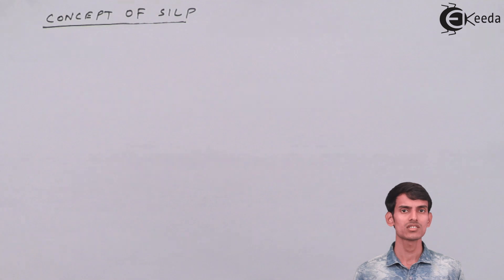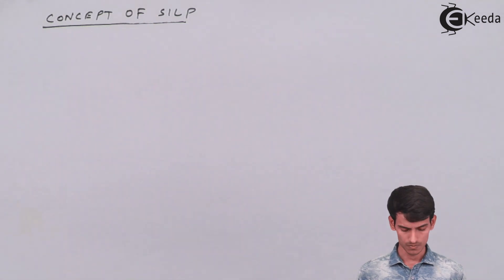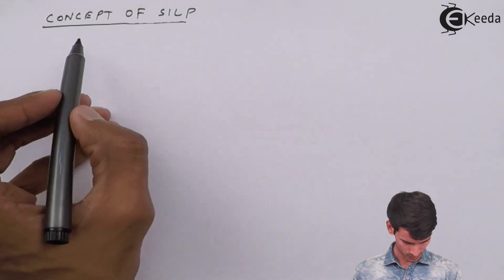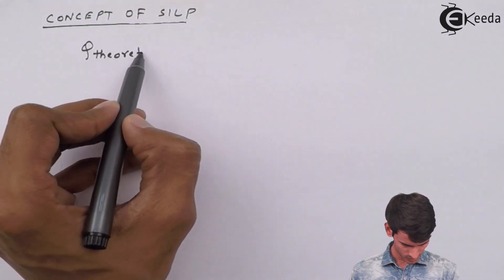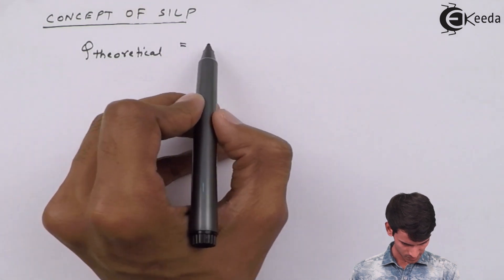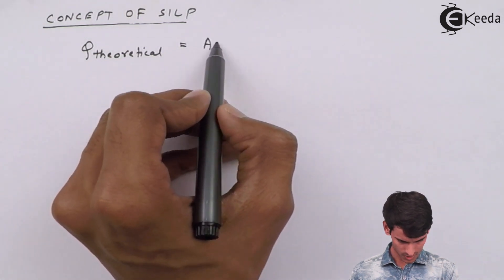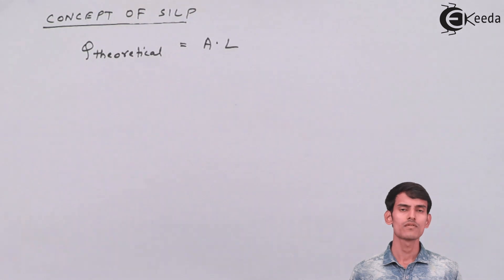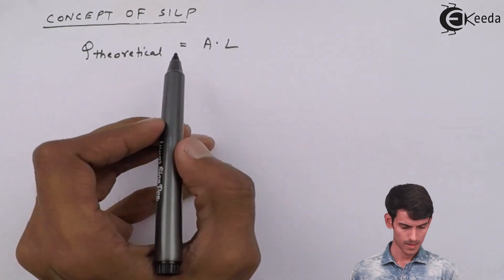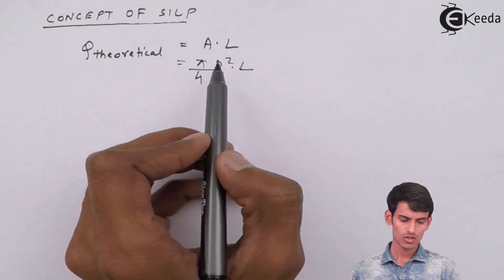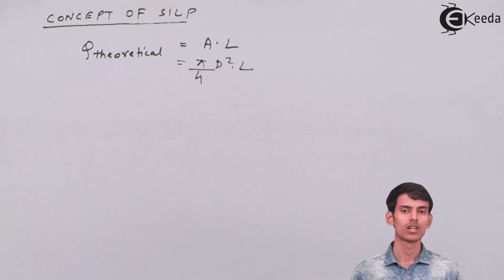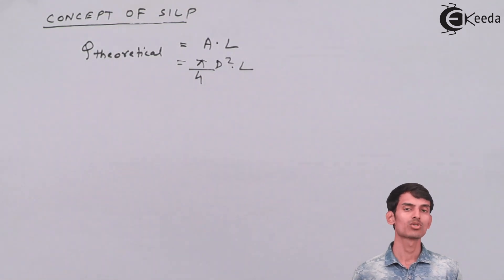To find the theoretical discharge through formula: it is the cross-sectional area of the piston multiplied by the length, where cross-sectional area is (π/4) × D², so theoretical discharge Q_theoretical = (π/4) × D² × L. This is the discharge obtained through calculation.